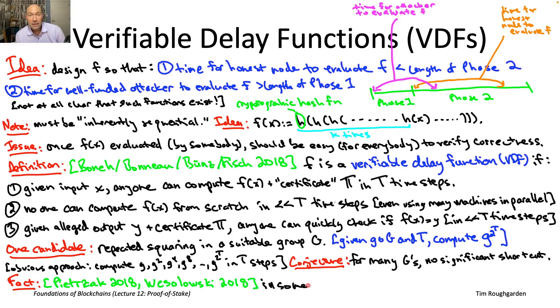So both of these works identify groups capital G where we believe property two holds, where we believe that there's no significant shortcut to repeated squaring if you're forced to do it from scratch.